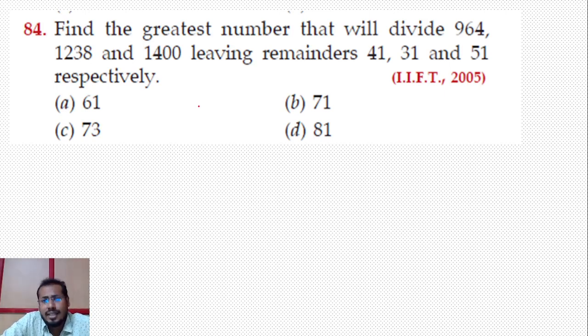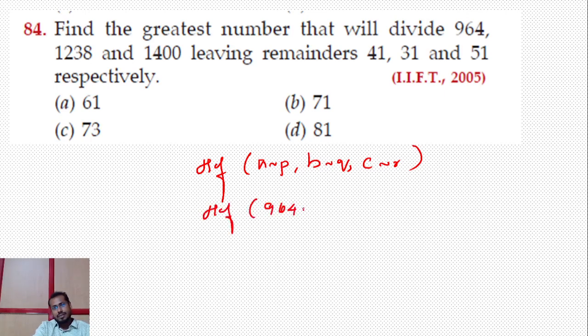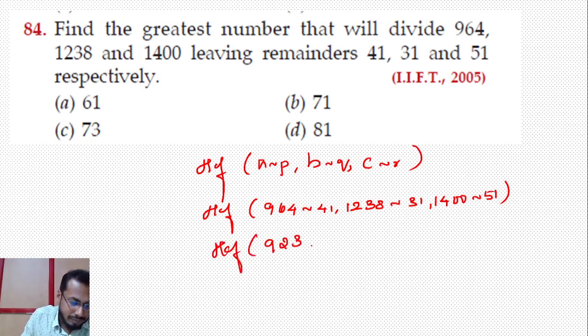Next, 85th question: Which of the following fractions is the largest? If you want to find the largest one, convert to percentages. 1 by 8 percentage: 1 by 4 is 25, so 12.5%. For 7 by 8: 12.5 times 7 equals 87.5%.